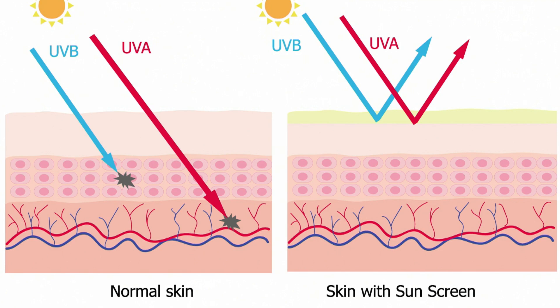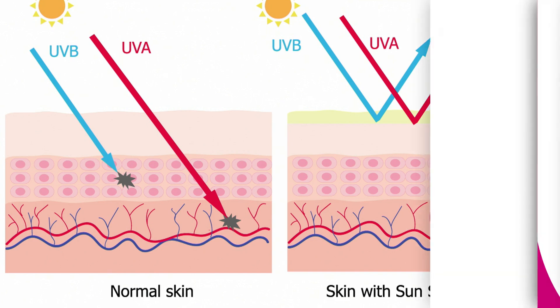If you look on the right side, that's showing the skin with sunscreen. What sunscreens do, especially if you're using a physical blocker, is reflect the sun so that it bounces off the skin and doesn't penetrate and cause damage.